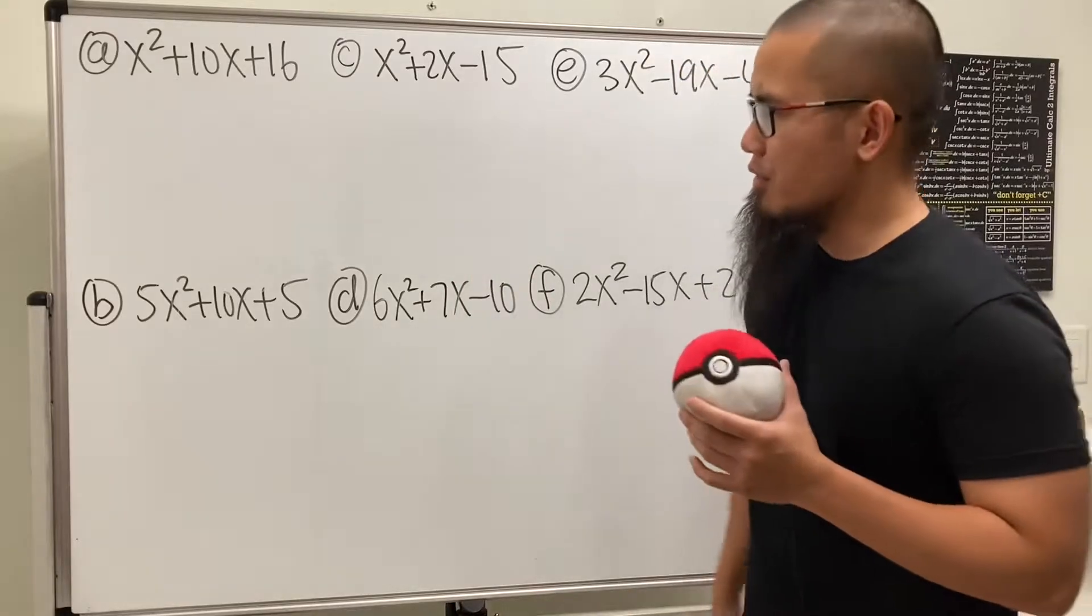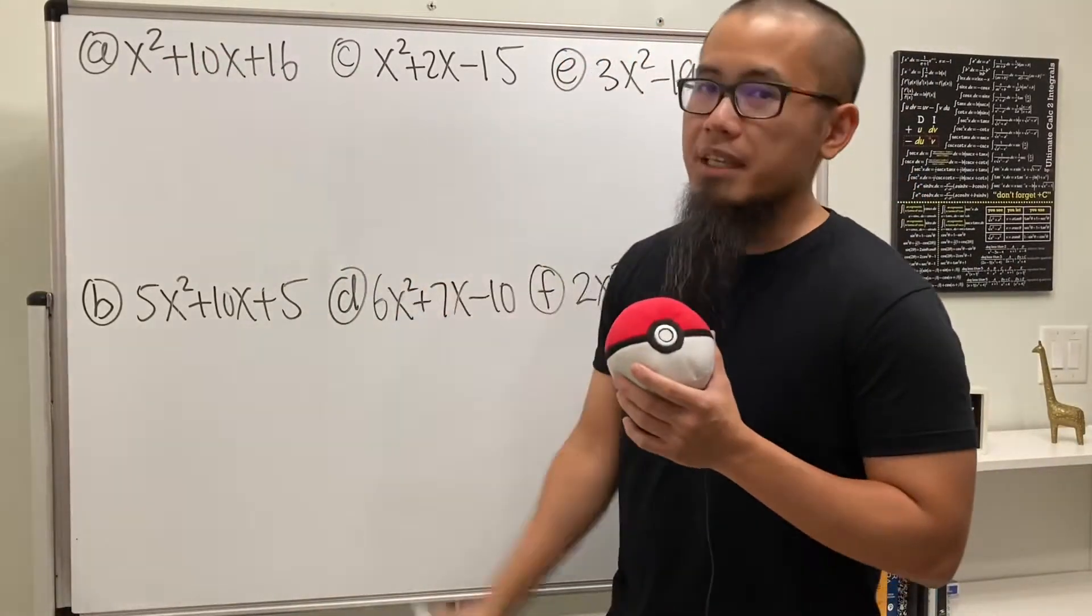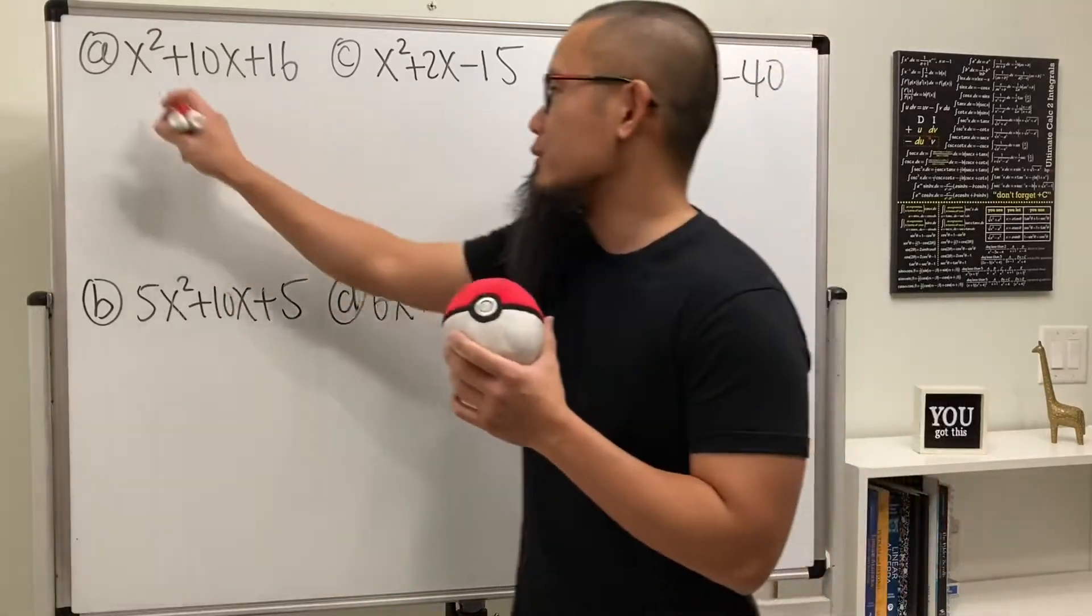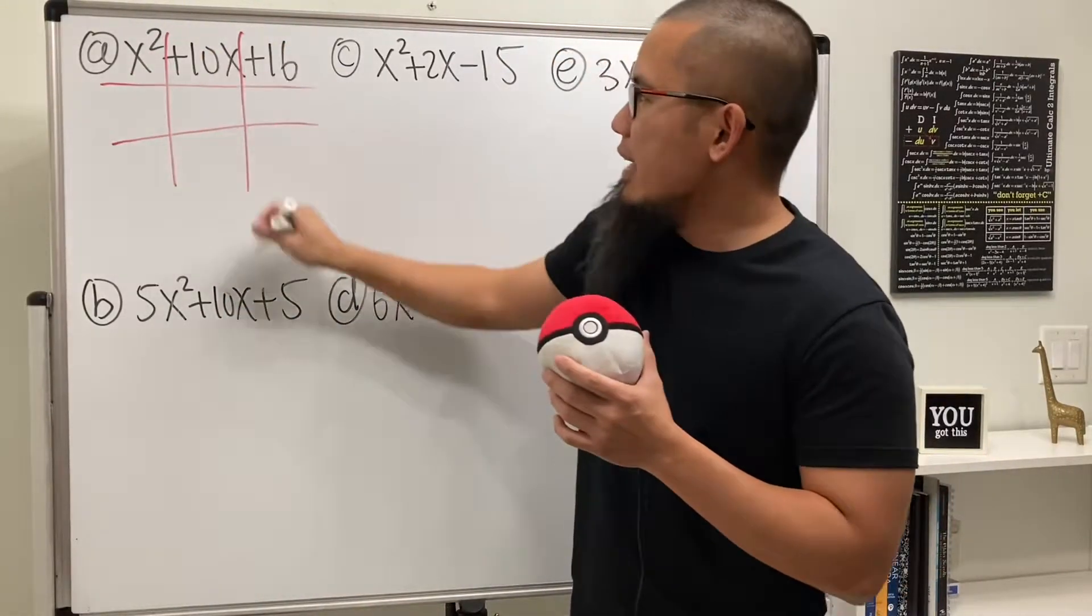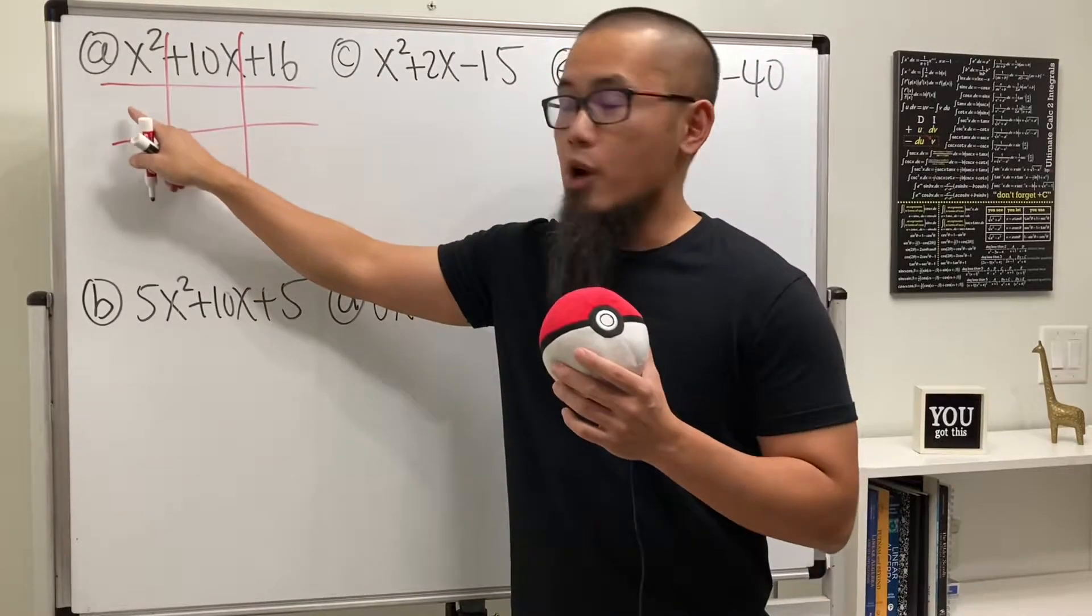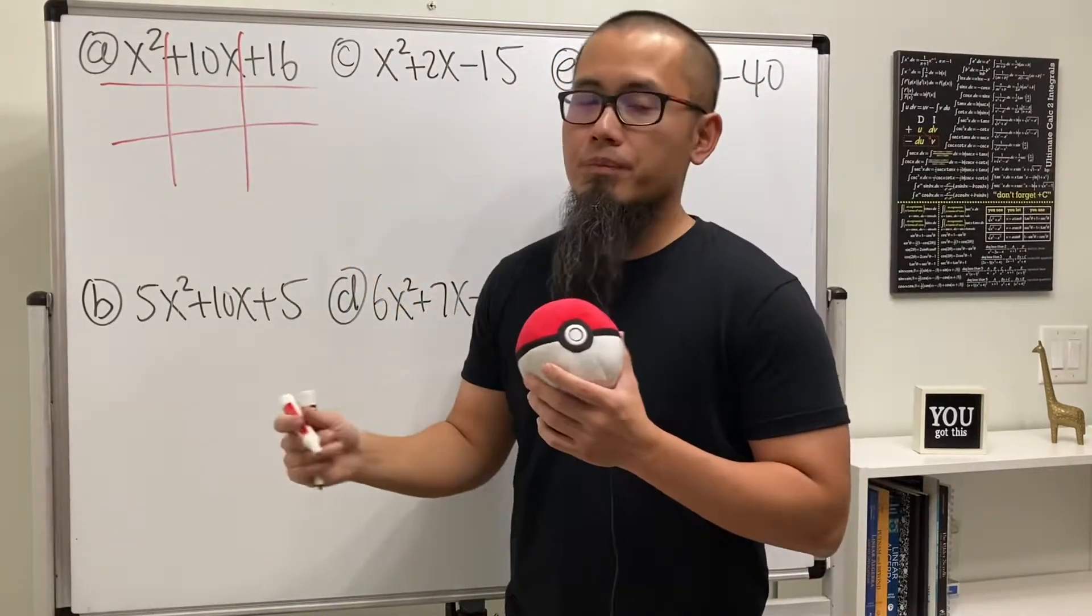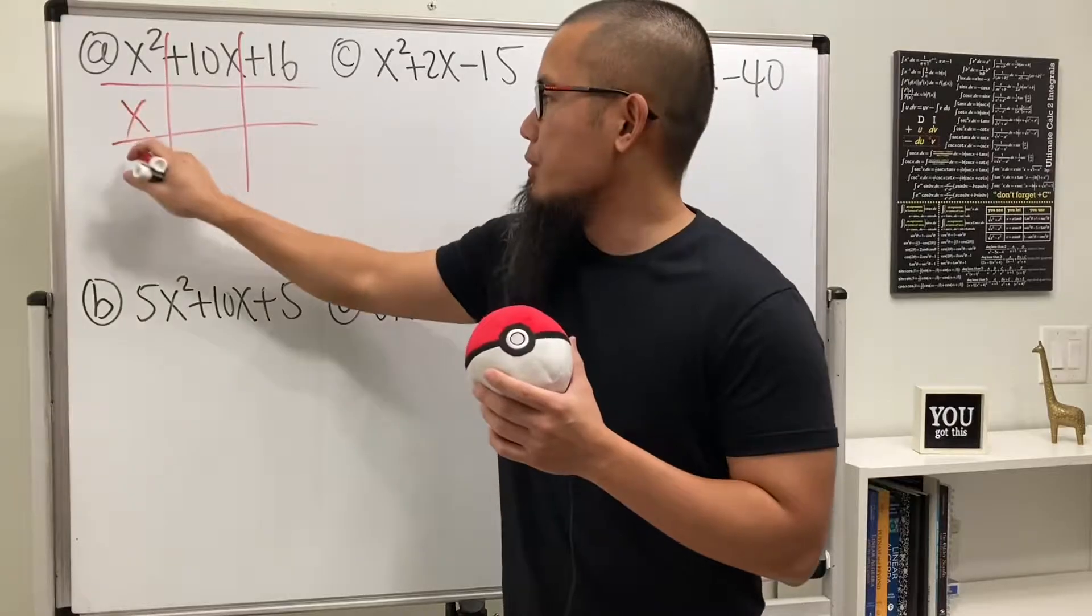Have a look right here. For the first one, we have x squared plus 10x plus 16. We are going to first start by drawing the tic-tac-toe board like this. And then we are just going to ask ourselves, what times what gives us x squared? Well, we can just use x and x.